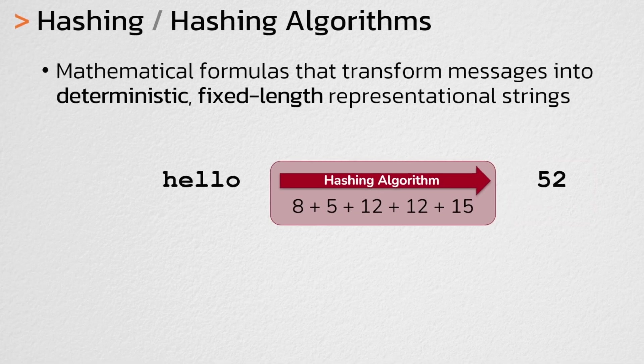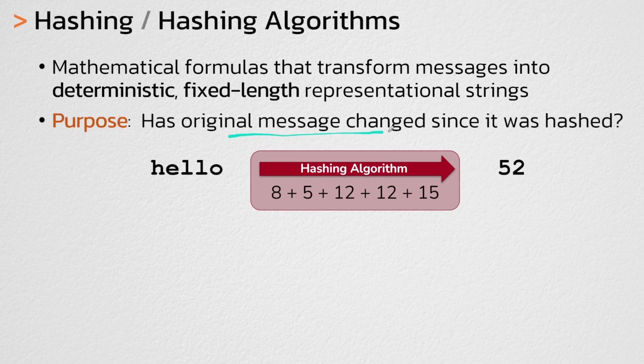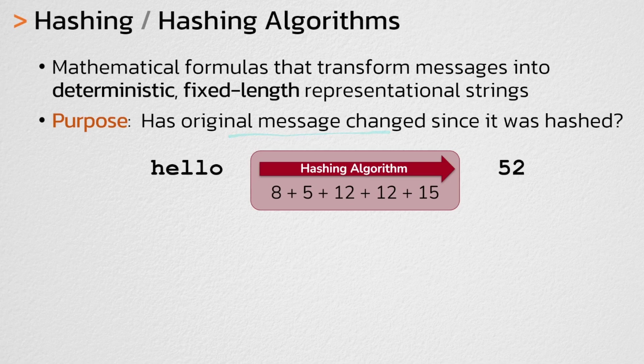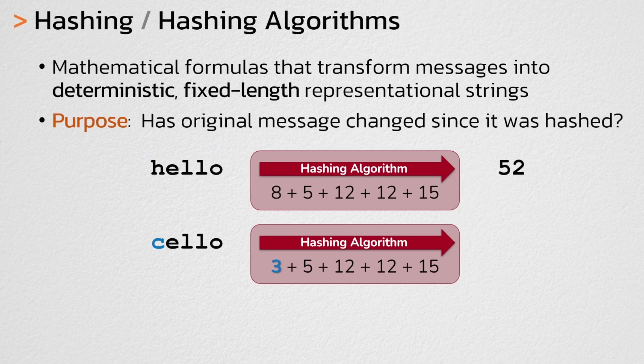The purpose of a hashing algorithm is to determine if the original message has changed since it was last hashed. For example, if we change the word hello to the word cello and we run it through the exact same hashing algorithm, well now since we're adding a C, which is a letter value of 3, instead of the H, which was a letter value of 8, we're going to end up with a different value. In this case 47.